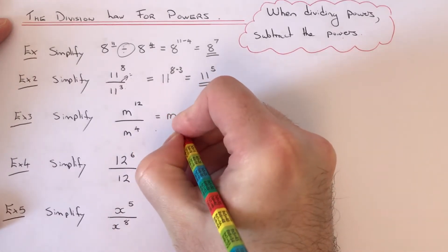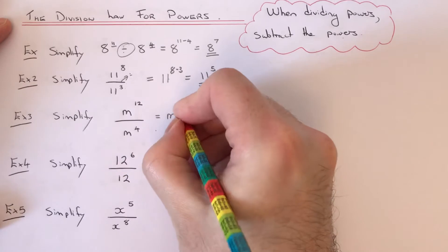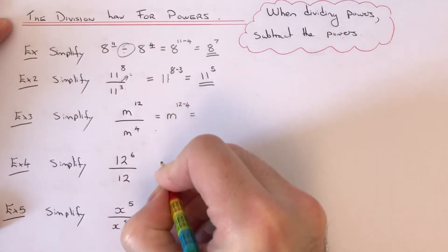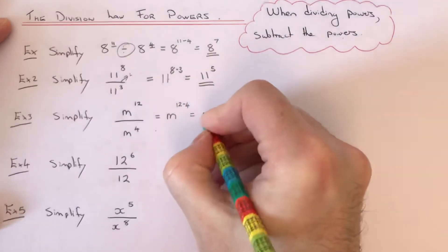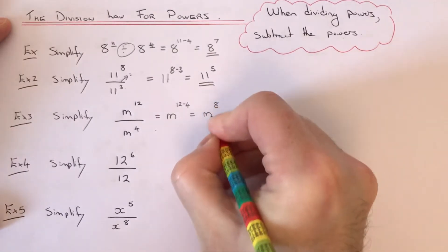We do 12 take away 4, which is m to the power of 8.